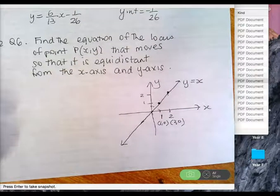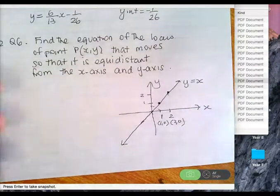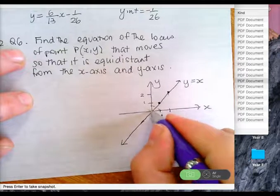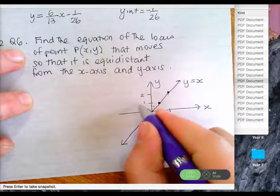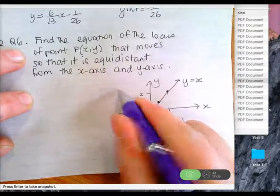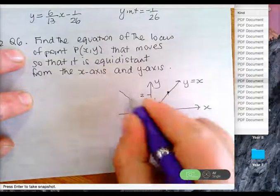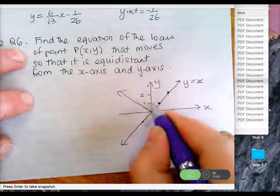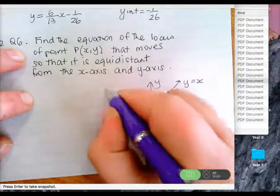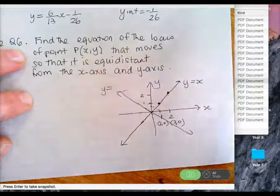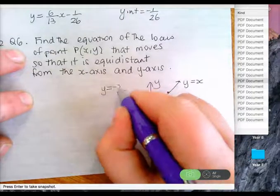There's another one we just missed. In quadrant two, you're equidistant there. The distance is the perpendicular distance. So it's y equals x and y equals negative x.